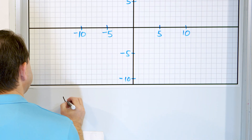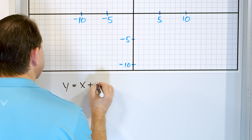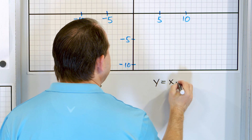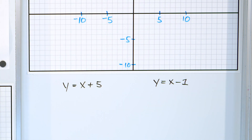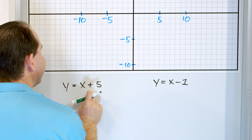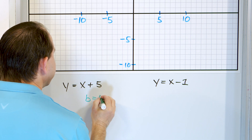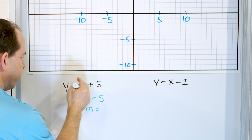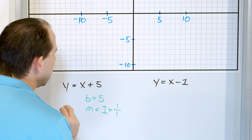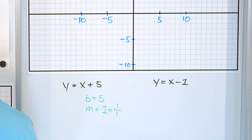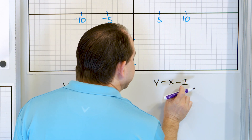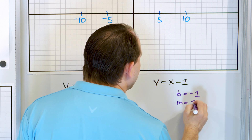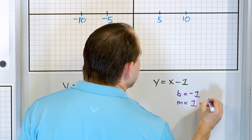Here is our last problem. The first equation is y equals x plus 5, and the second equation is y equals x minus 1. What is the y-intercept of the first equation? That's going to be 5. The slope is whatever is in front of x — an invisible 1 — so the slope is 1, which is a rise over run of 1 over 1. For the second equation, the y-intercept is negative 1, and the slope is again 1 — rise over run, 1 over 1.